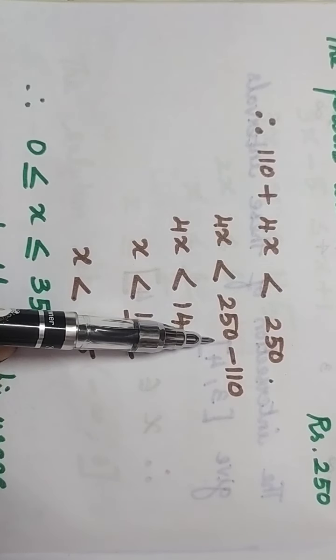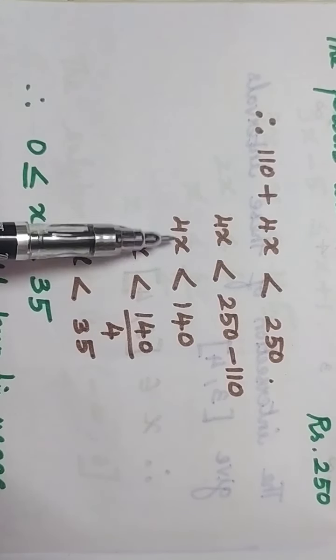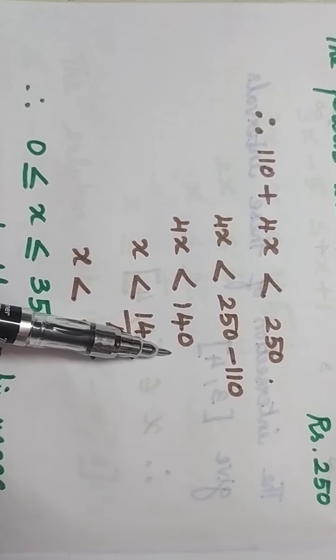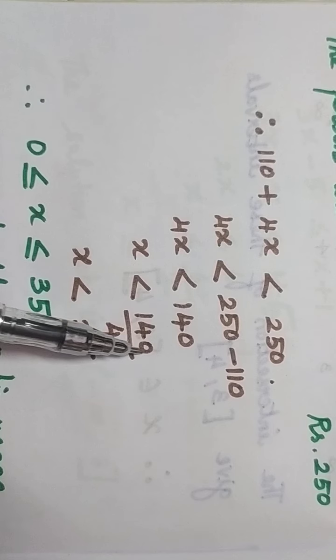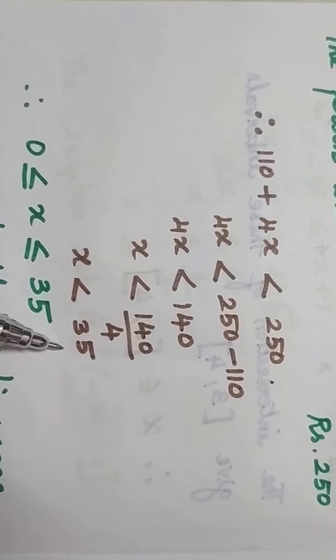So 4x is less than 250 minus 110, which gives you 4x is less than 140. So x is less than 140 divided by 4. So x is less than 35.